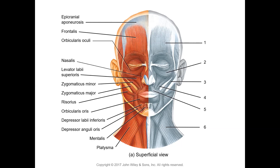Moving on to the muscles of the head, neck, and face — figure 14.1 shows the superficial layer of muscles of the head and neck. Number one is the frontalis muscle, also known as the frontal belly of the occipitofrontalis muscle, because it goes from the occipital bone at the back to the frontal bone in the front, with an epicranial aponeurosis on top. The frontalis and occipitalis are essentially two bellies of the same muscle.